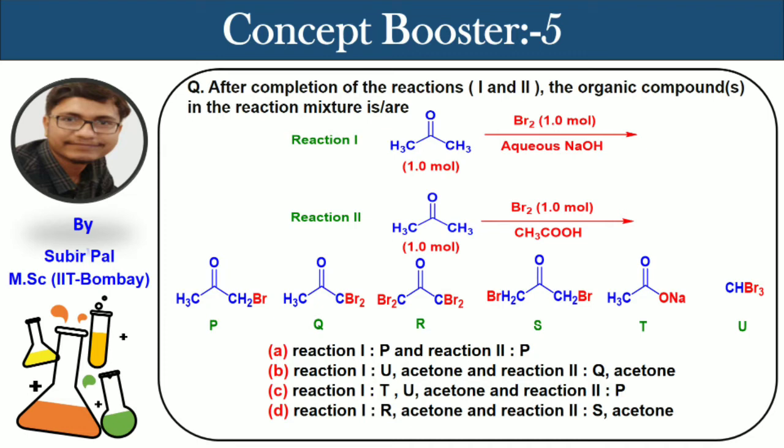In reaction 1, one mole of acetone is treated with one mole of bromine in aqueous NaOH. In reaction 2, one mole of acetone is treated with one mole of bromine in the presence of acetic acid. The reaction conditions are quite different and the products are listed as P, Q, R, S, T, U. Let me come to reaction 1.